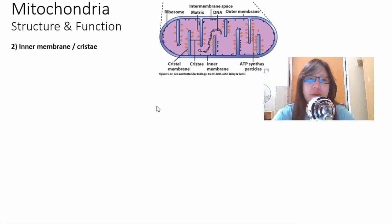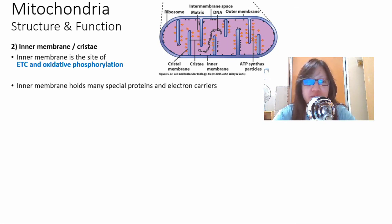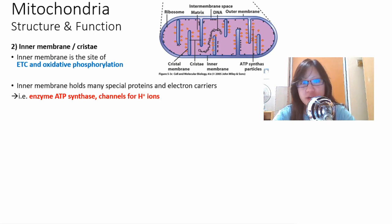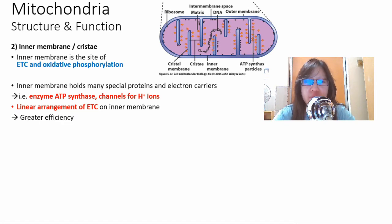Let's move on to the inner membrane or the cristae. The inner membrane is the site of electron transport chain and oxidative phosphorylation. It holds many special proteins and electron carriers, for example, enzyme ATP synthase, channels for H plus ions, components of the electron transport chains. This inner membrane doesn't have random arrangement but there is a linear arrangement of electron transport chain on the inner membrane, arranged in a row. This is for greater efficiency. It's faster if they are right next to each other in a row.